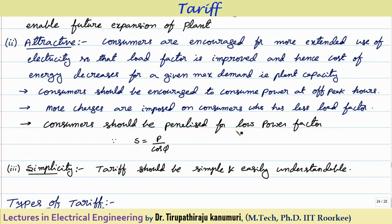The consumer should be penalized for low power factor. We know that apparent power equals active power divided by cos phi. Active power is the actual power doing your work. For a given active power, as the power factor decreases, apparent power increases. The rating of the power plant and all equipment mainly depends on apparent power. As the power factor decreases, the apparent power increases — meaning more rating is required, or for a given rating, we cannot supply the required value of power. That is why the consumer should be penalized if the power factor is low. To understand this concept clearly, you can refer to the power factor improvement topic where these things are discussed in detail.